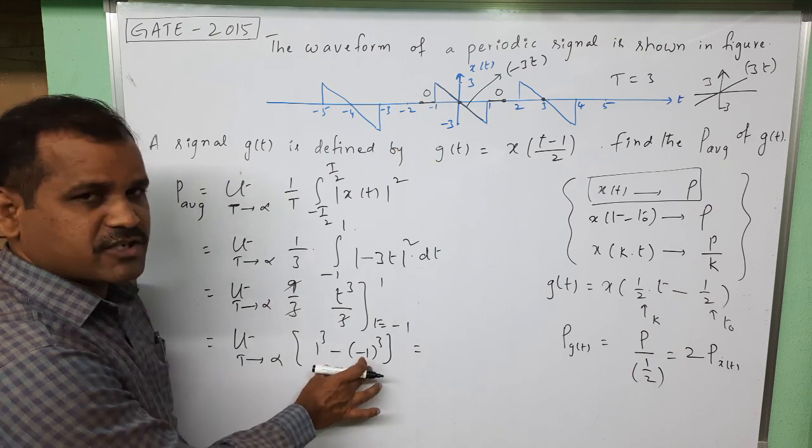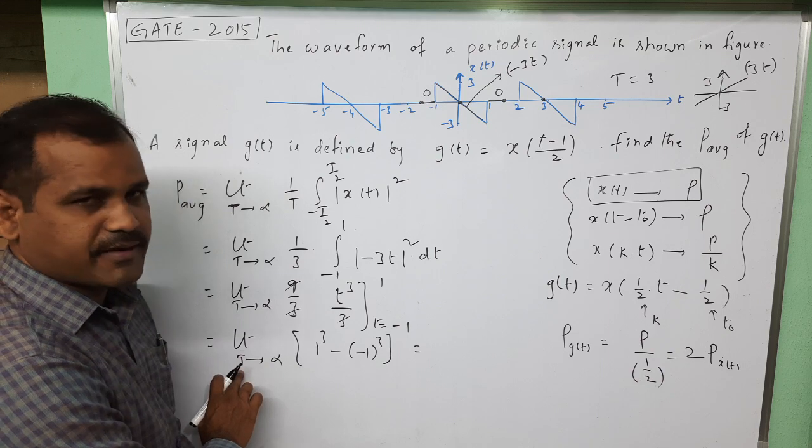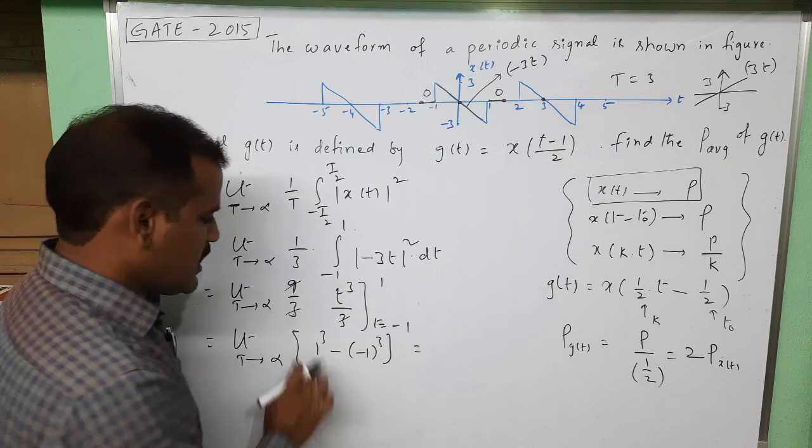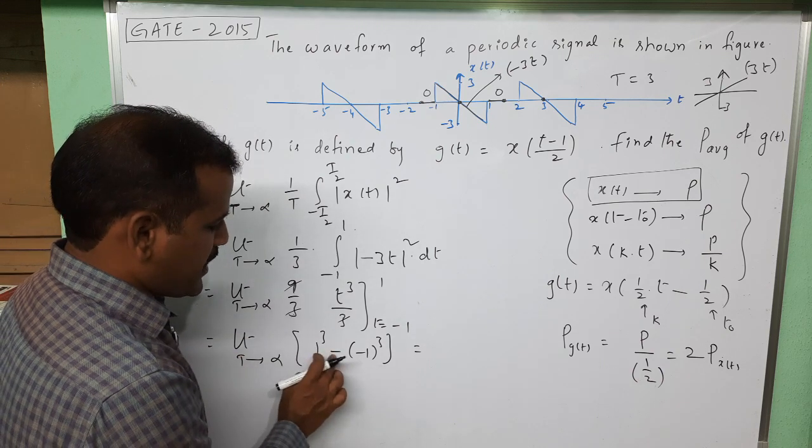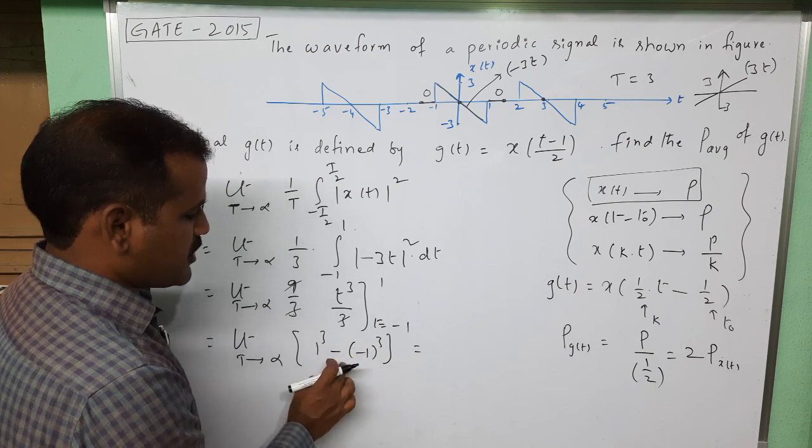So we can remove this limit. The remaining expression is 1³ minus (-1)³, which is 1 plus 1, equals 2. This is 2 watts power for the given signal x(t).